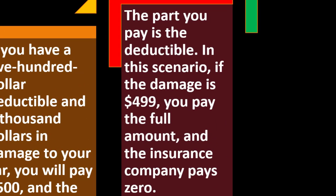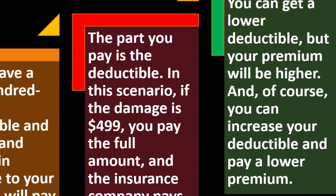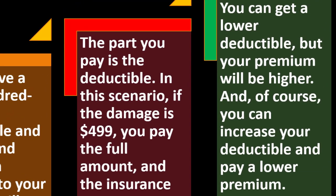In this scenario, if the damage is $499 — below the $500 deductible — you pay the full amount and the insurance company pays zero. You can get a lower deductible, but your premium will be higher. That's the typical scenario with many different types of insurance.